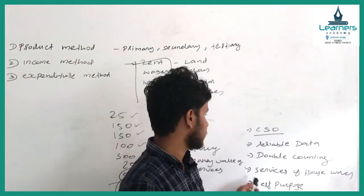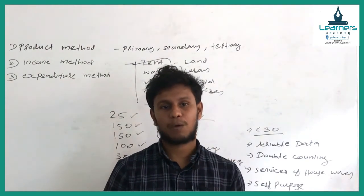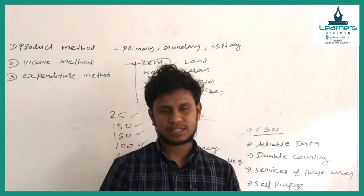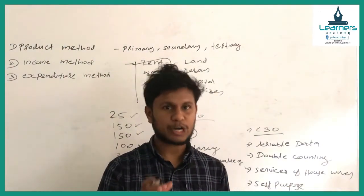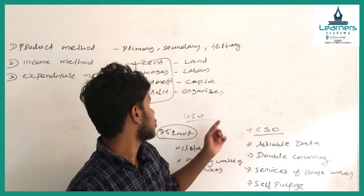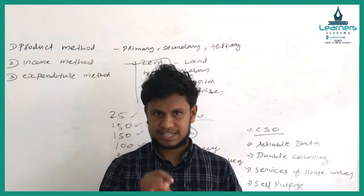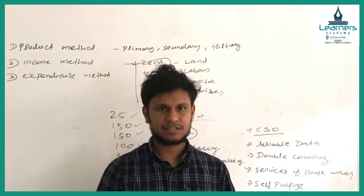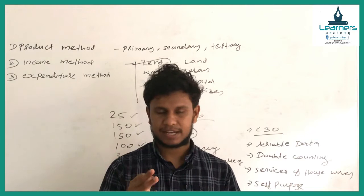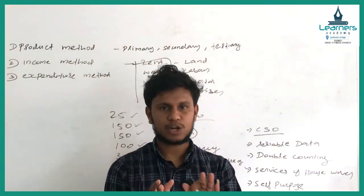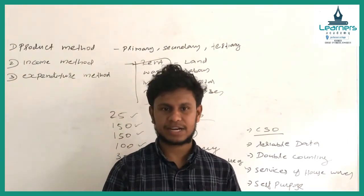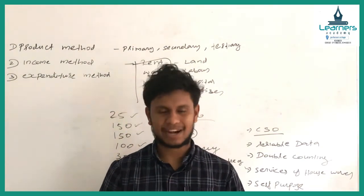So what are the problems in calculating national income? We must calculate contributions from the primary, secondary, and tertiary sectors. The national income data is not always available for all three sectors. Contribution of primary, secondary, and tertiary sectors may not be available.